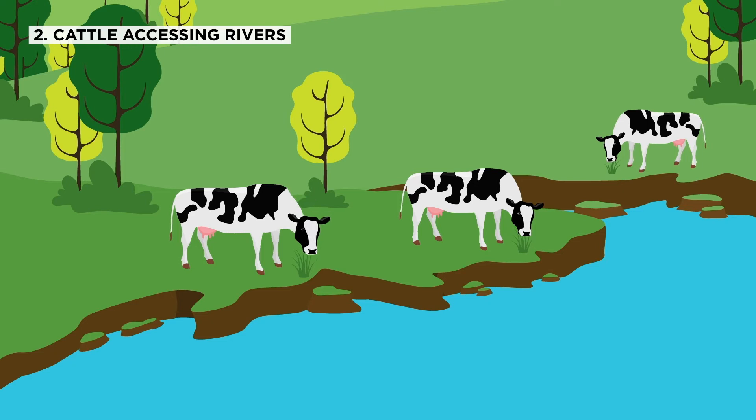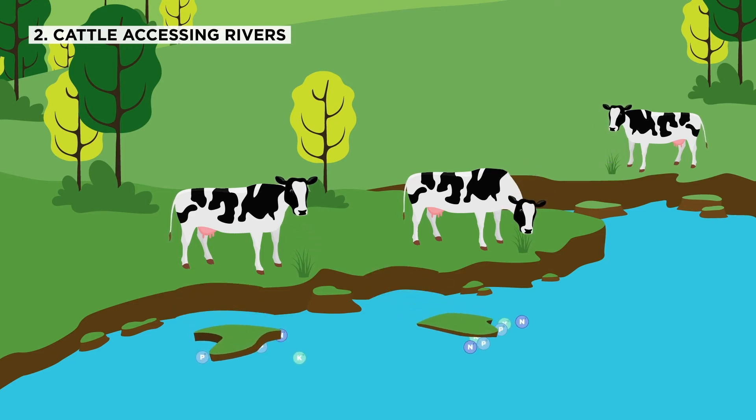Freely roaming cattle can access rivers, grazing on the riverbanks and causing soil erosion, also known as soil poaching.